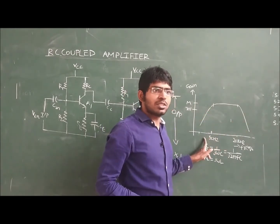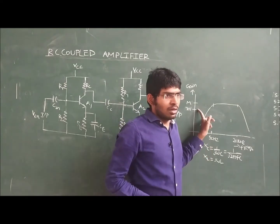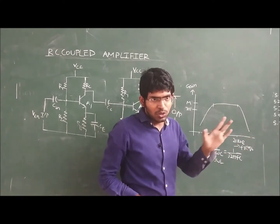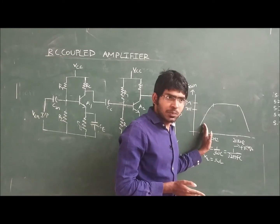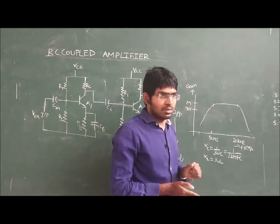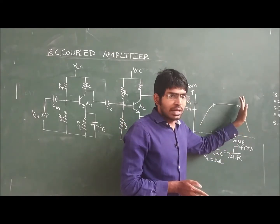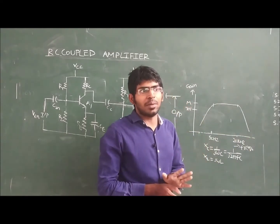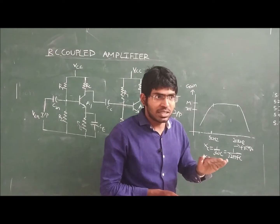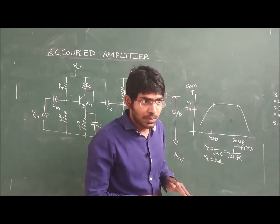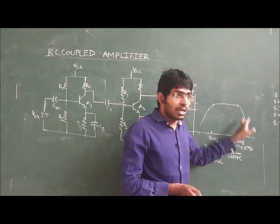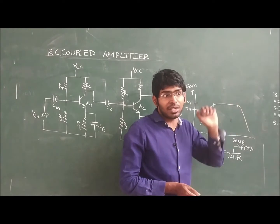For every frequency of a signal, we are getting a different gain. If we see, there are three regions — we can classify this graph into three regions. Below 50 Hz, we observe an increment in the gain. Above 20 kHz, the gain is decrementing linearly. In between 50 Hz and 20 kHz, the graph is constant — the gain is constant. We are discussing why the gain is incrementing, why the gain is decrementing, and why the gain is constant in these three different regions.